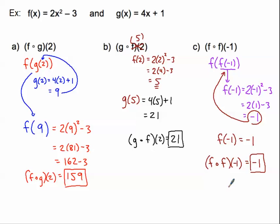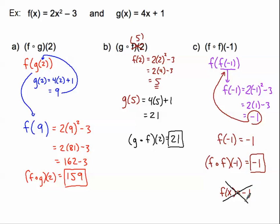I don't want anybody to make a common mistake I see students make. When you get down to your final answer of negative 1, don't say that f of x equals negative 1 — that doesn't make any sense. f of x equals 2x squared minus 3, and nothing is changing that. f of negative 1 might equal negative 1, but please don't use wrong notation at the end after doing all the correct work.